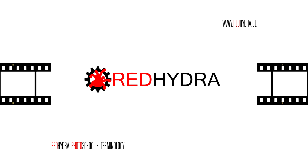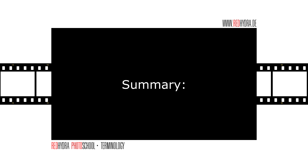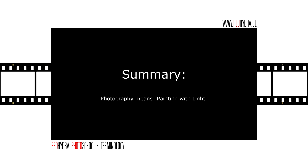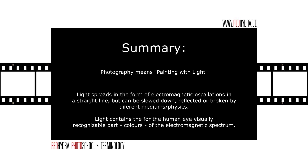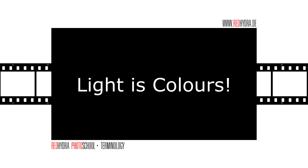Let's summarize and extract the important information of this lecture. First of all, photography means painting with light. Then, light spreads in the form of electromagnetic oscillations in a straight line, but can be slowed down, reflected, or broken by different physical mediums. And finally, light contains the visually recognizable part — let's say colors — of the electromagnetic spectrum. So I would basically say light is colors.